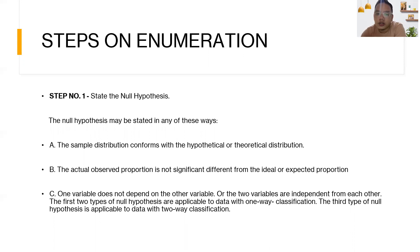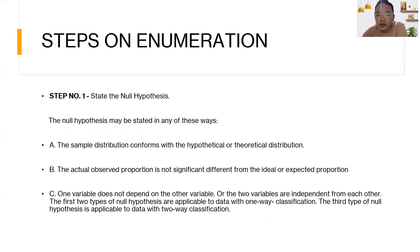Steps on enumeration. Step number one: state the null hypothesis. The null hypothesis may be stated in any of these ways. A: the sample distribution conforms with the hypothetical or theoretical distribution. B: the actual observed proportion is not significantly different from the ideal or expected proportion. C: one variable does not depend on the other variable, or the two variables are independent from each other. The first two types of null hypothesis are applicable to data with one-way classification. The third type of null hypothesis is applicable to data with two-way classification.